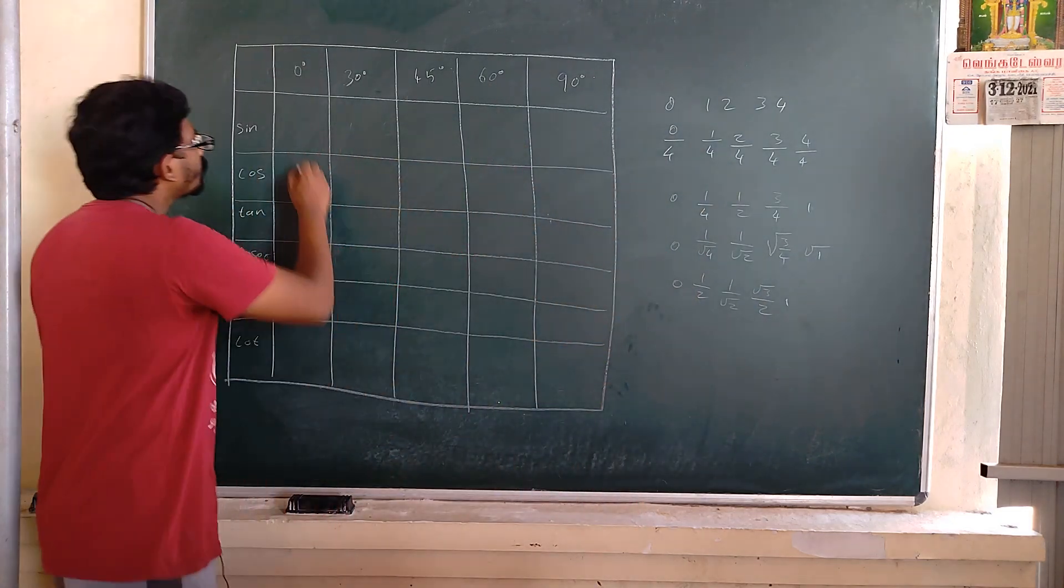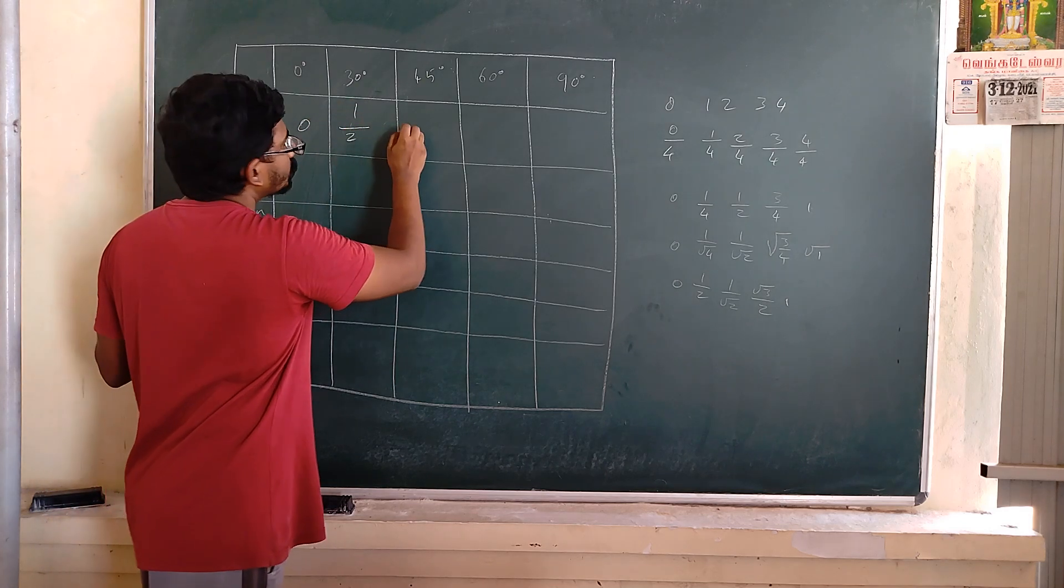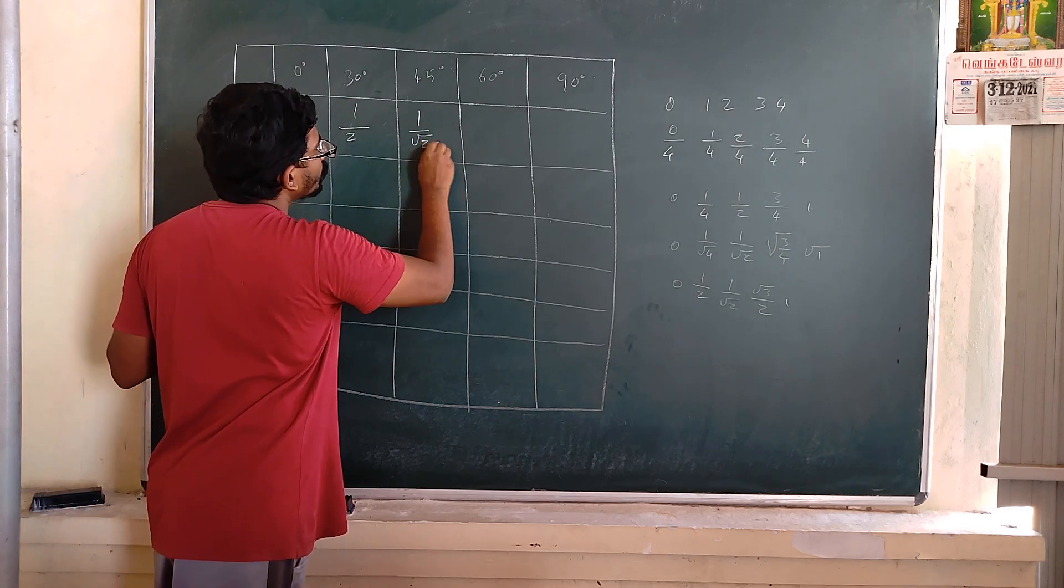Fix these values here for sine: that is 0, 1/2, 1 by square root of 2, square root of 3 by 2, and 1.